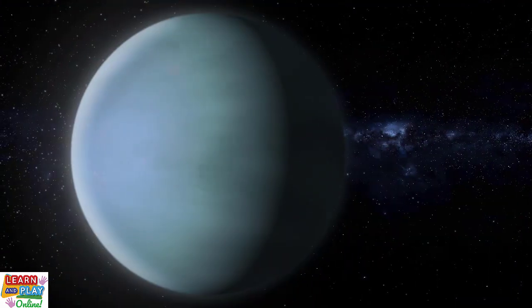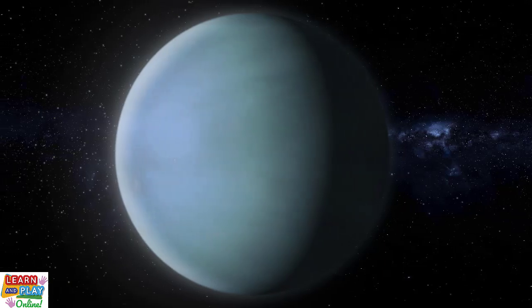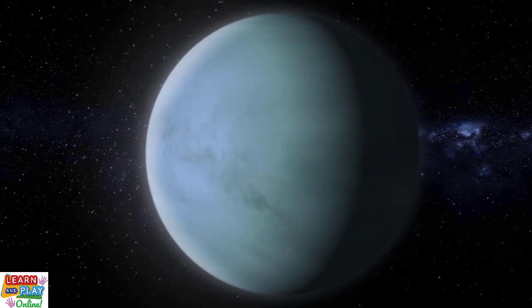In comparison to Earth, Uranus spins faster. One day on Uranus is only 17 hours and 14 minutes long.